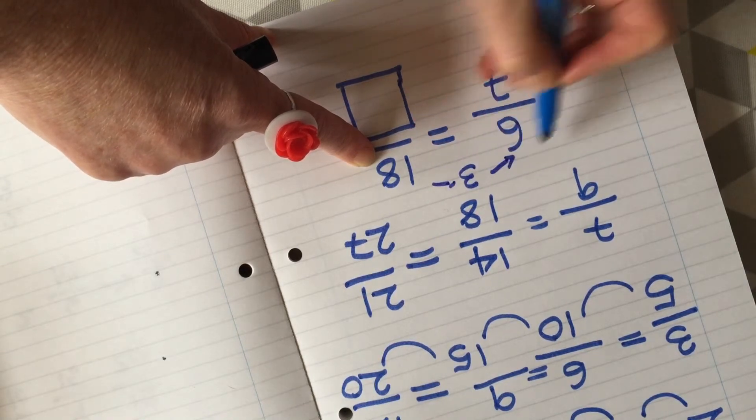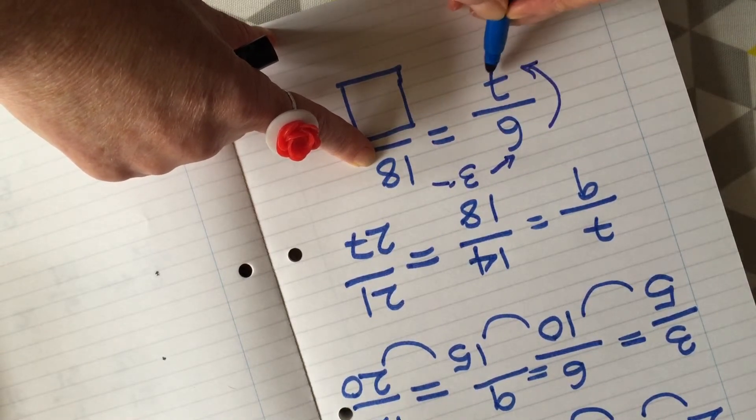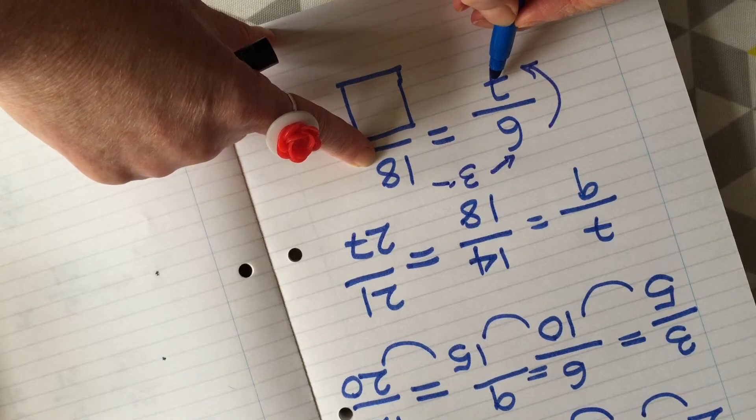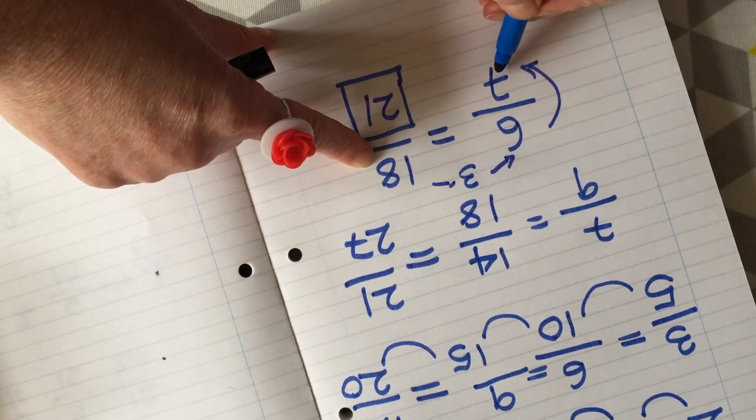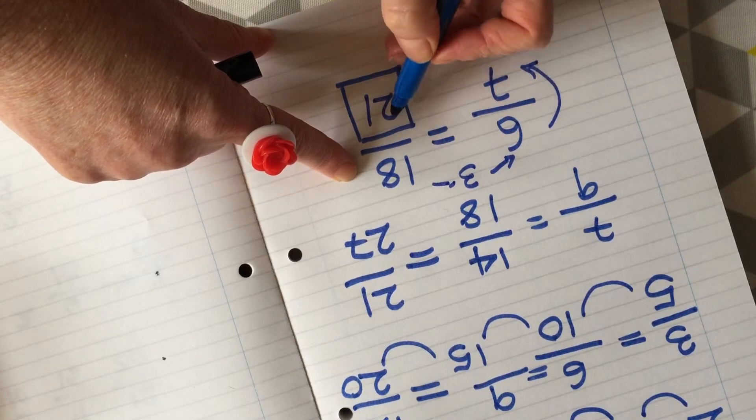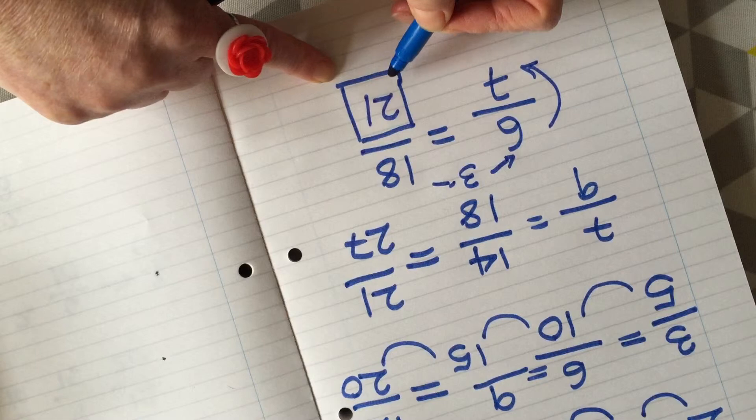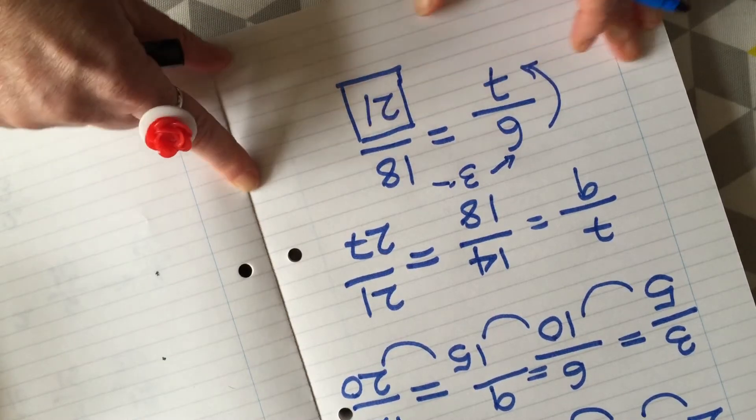Then we kind of went this way and round to the seven and we said what's seven times three, and the answer is 21. So six sevenths is the same as 18 twenty-firsts, if that's the right way of saying it.